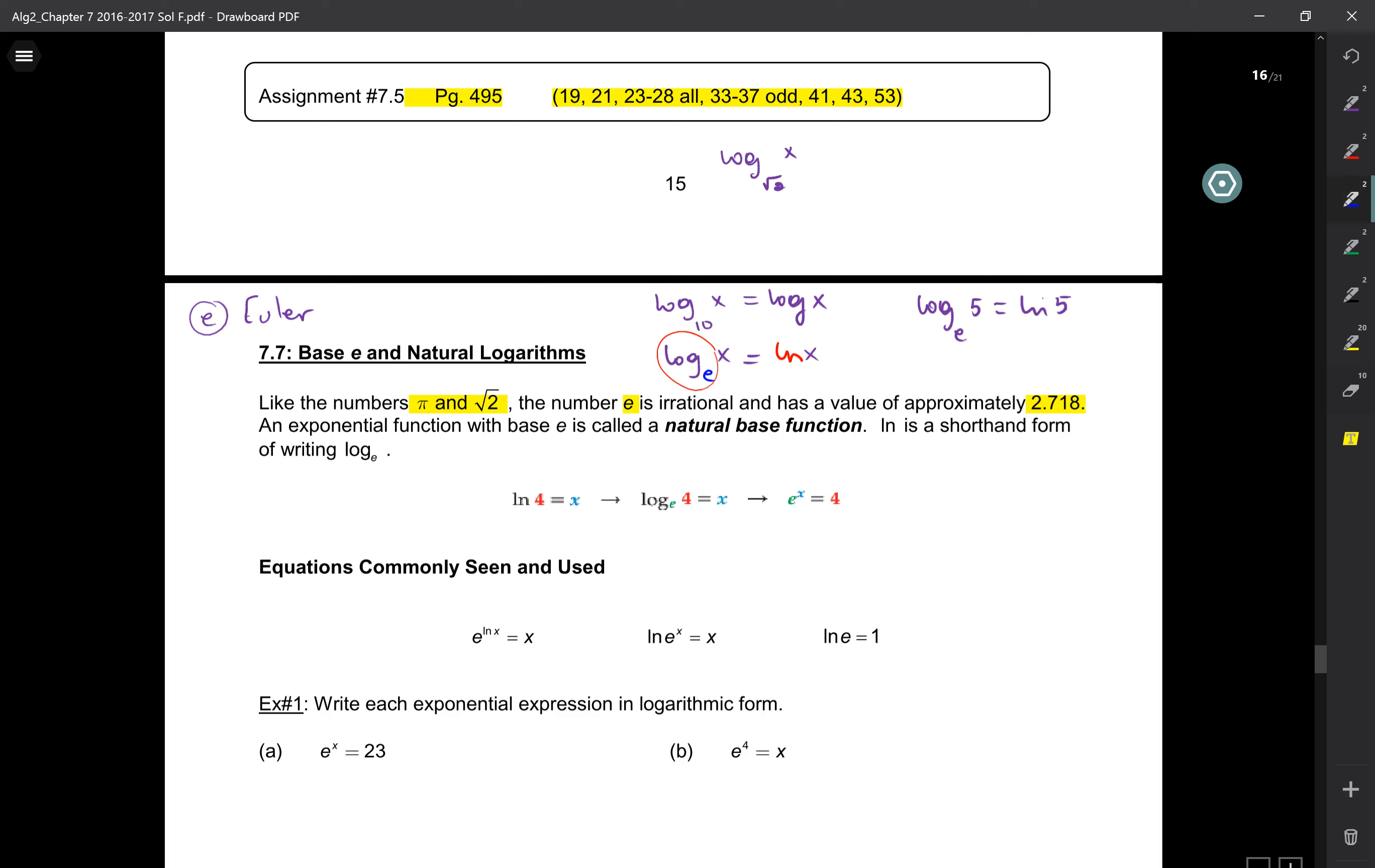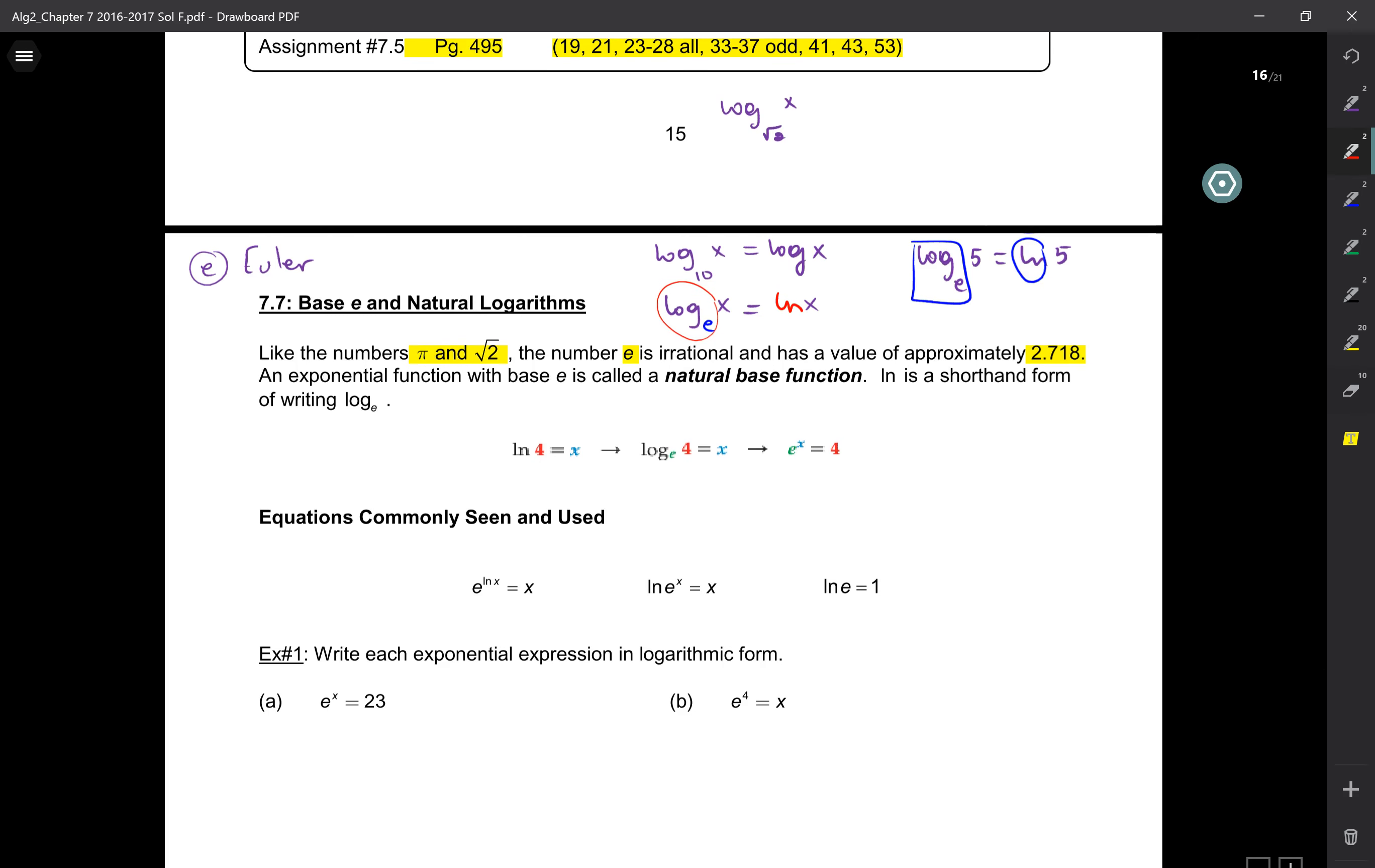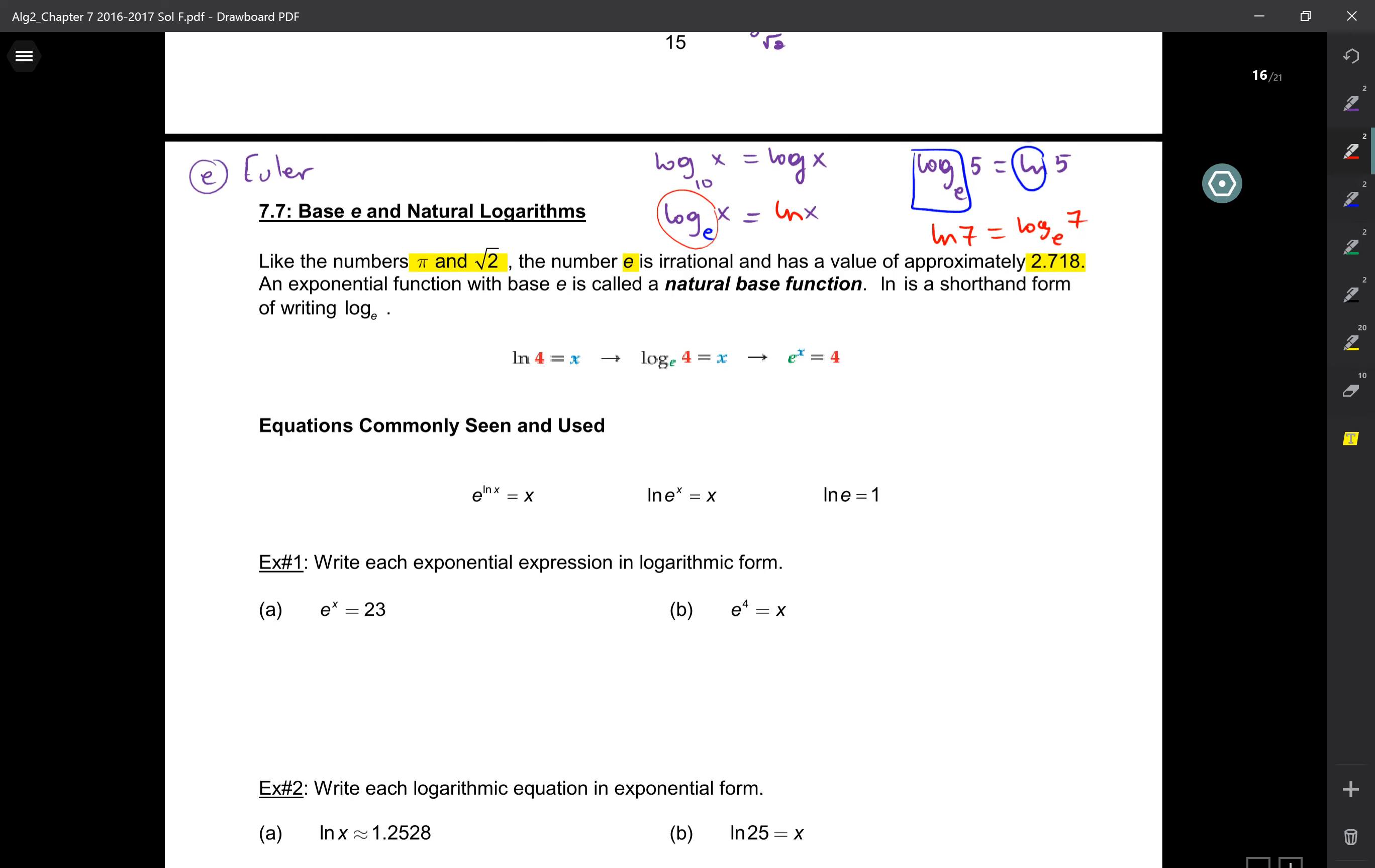So you're walking down the street, you see log base E of 5, you go, oh, that's just ln of 5. So ln, in other words, is just shorthand for log of E. Similarly, I'm walking down the street and I see something like ln of 7, I go, oh, that's just log with a base E of 7. Does that make sense? So that's what this is telling us, that E is the natural base, and in shorthand form, log of E is just ln of E.